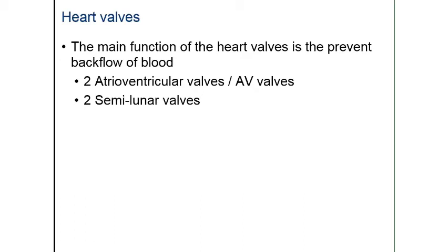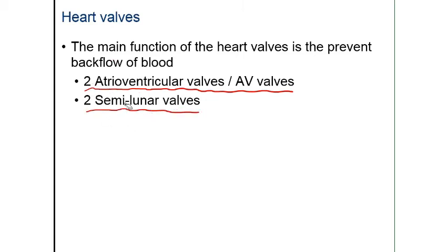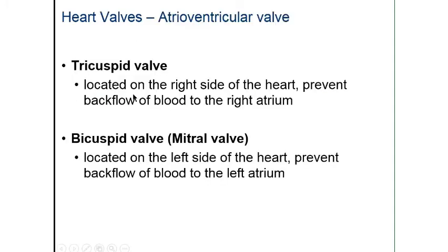Within the heart there are heart valves that ensure blood flows in a single direction, preventing backflow and turbulent mixing. There are four heart valves in the human heart — two AV valves (atrioventricular valves), located between the atrium and ventricle on each side, and two semilunar valves that look like half moons. The AV valve on the right side is the tricuspid valve, with three flaps, and on the left side is the bicuspid valve, also called the mitral valve, with two flaps.